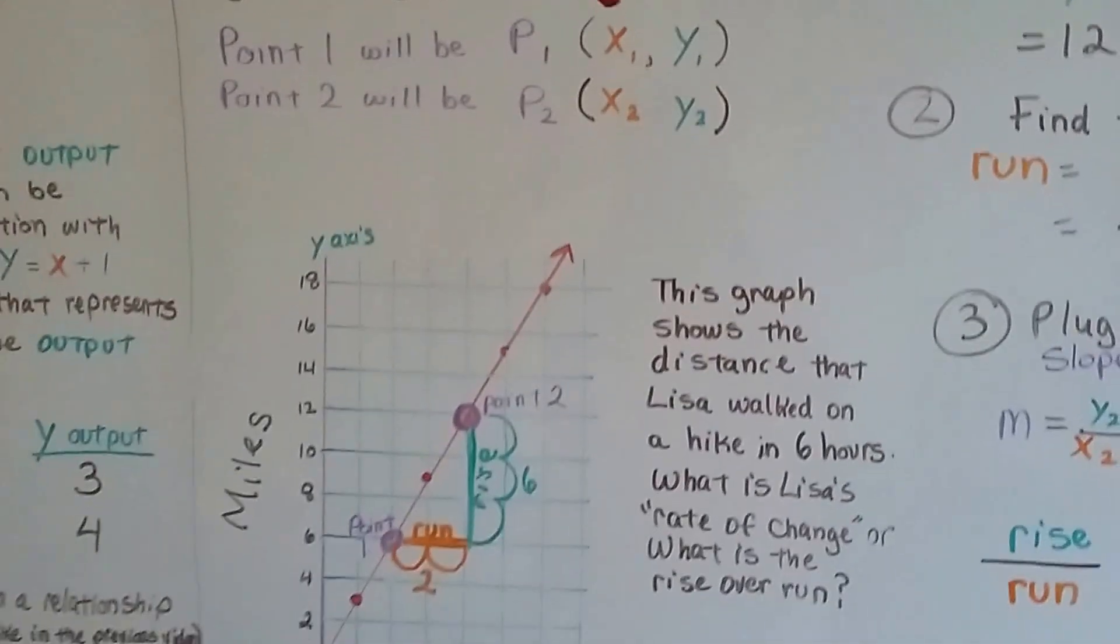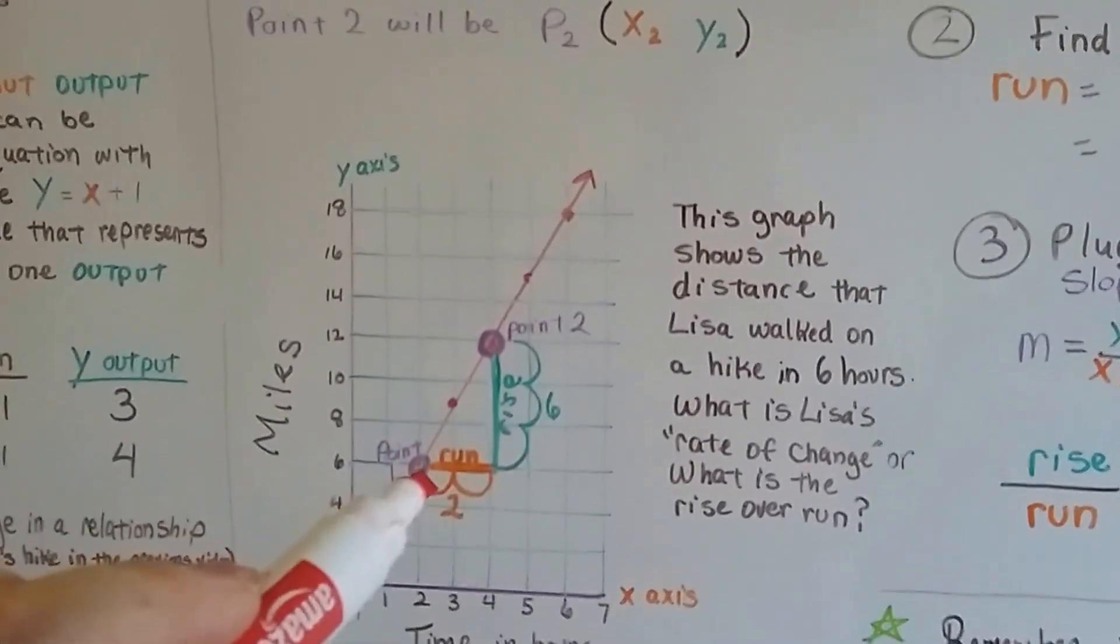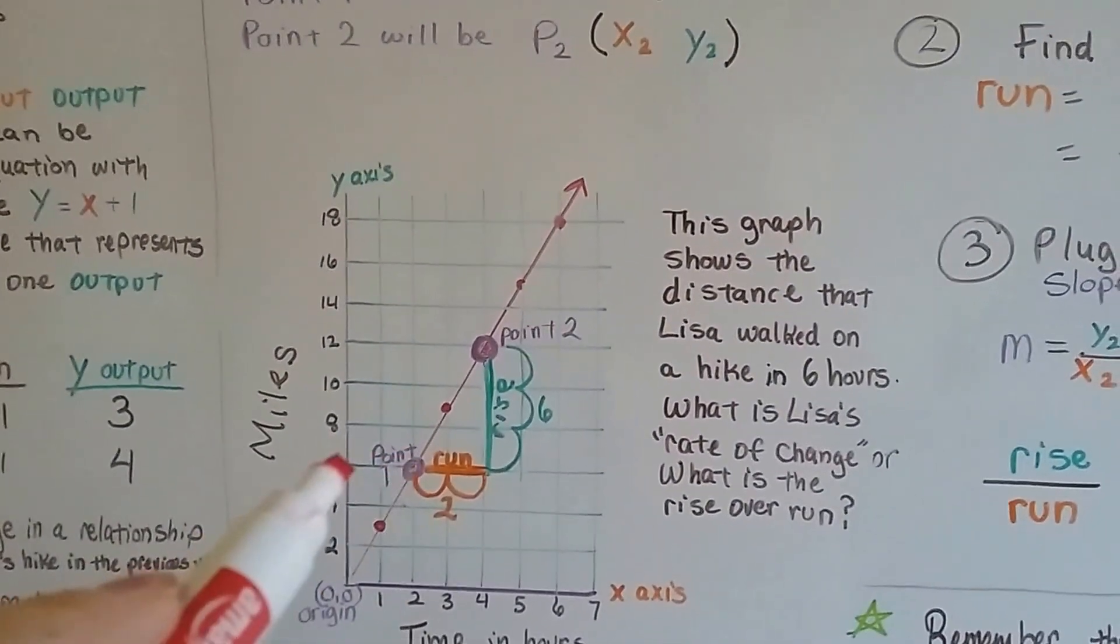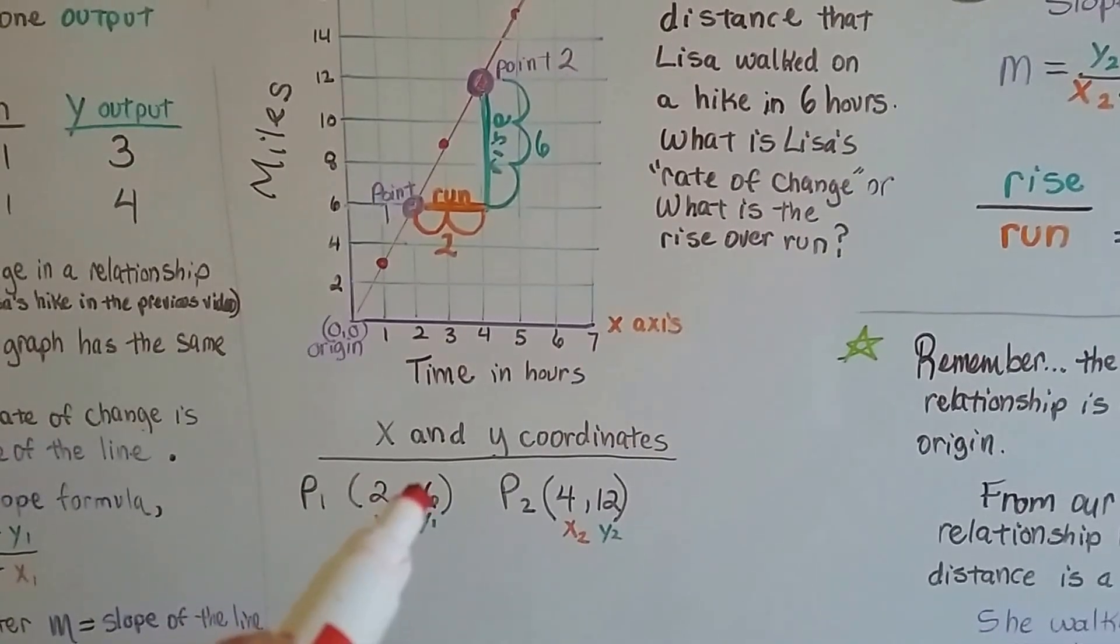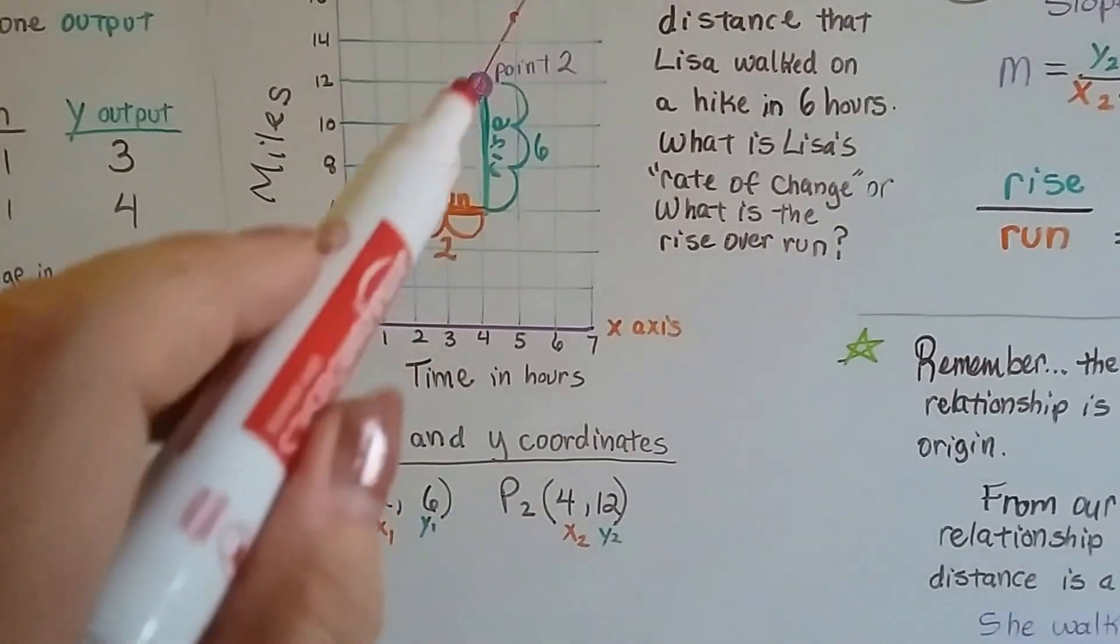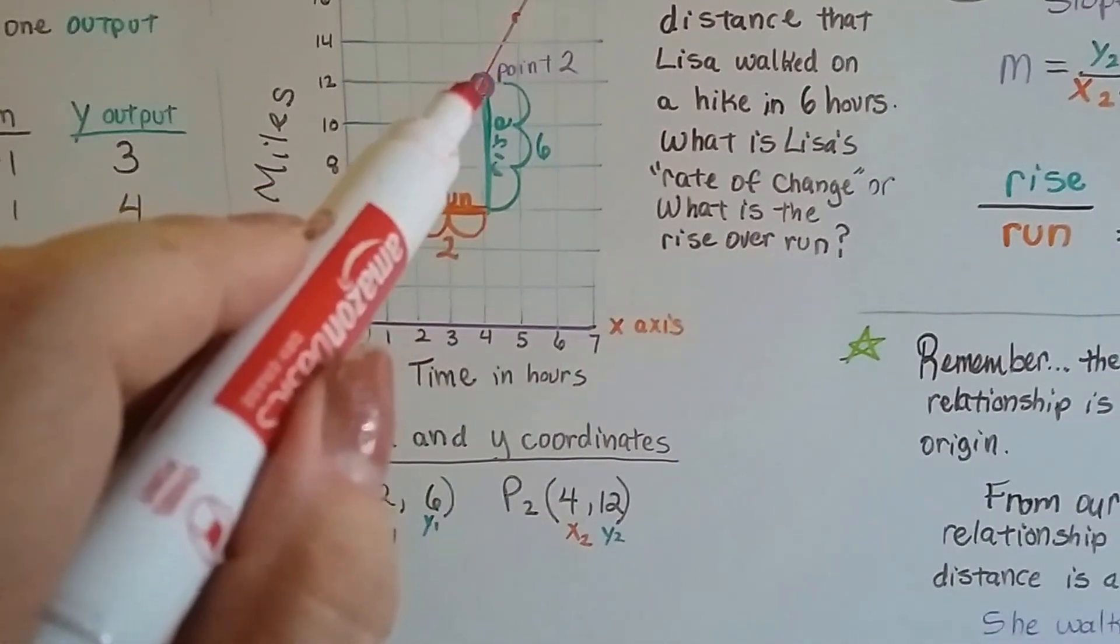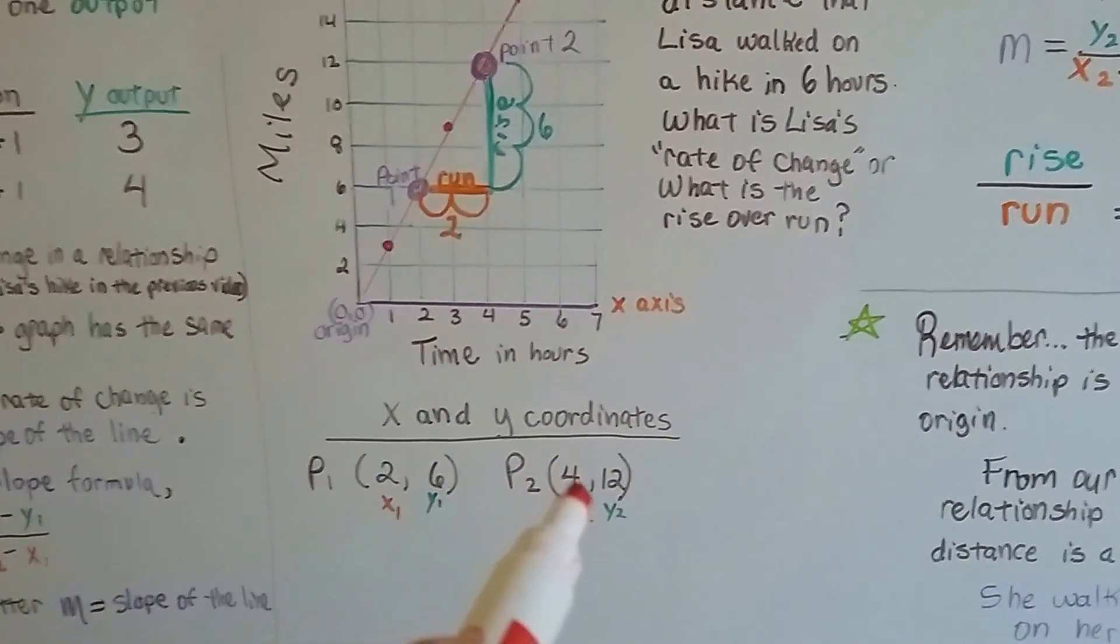So we found point 1 and point 2. In point 1, here's point 1, x1 is going to be 2, and y1 is going to be 6. So we found our x1 and y1, it's 2 and 6. Now for point 2, that's this one, our x value is 4, and our y value is 12. So we got 4 comma 12.